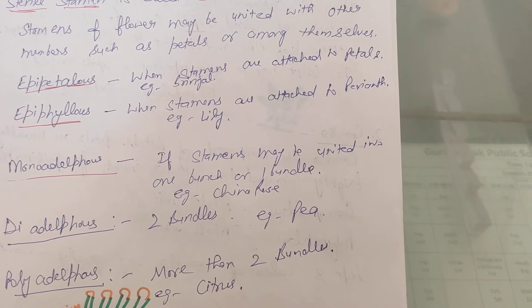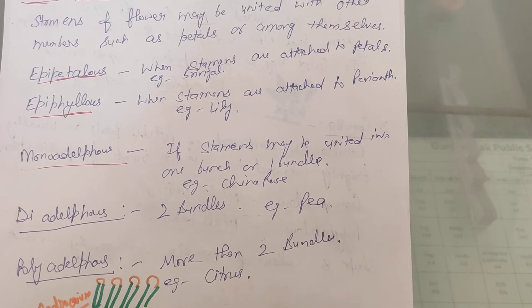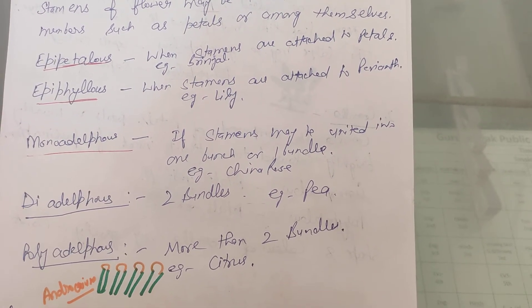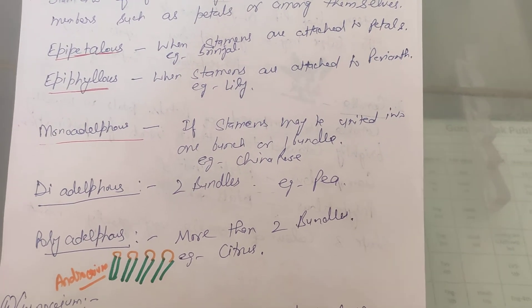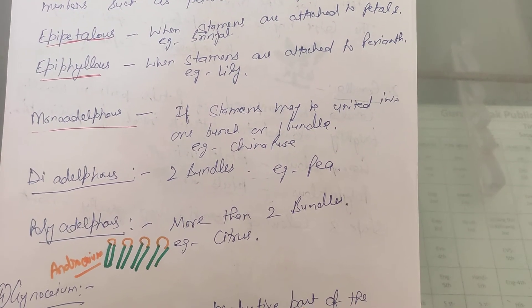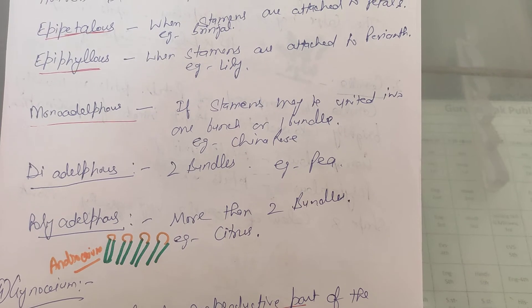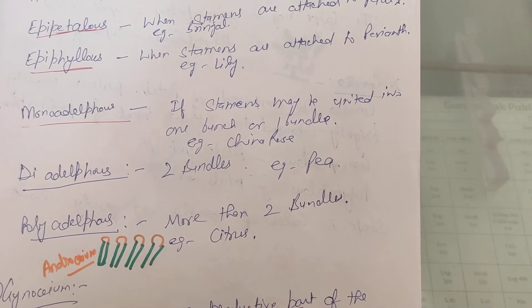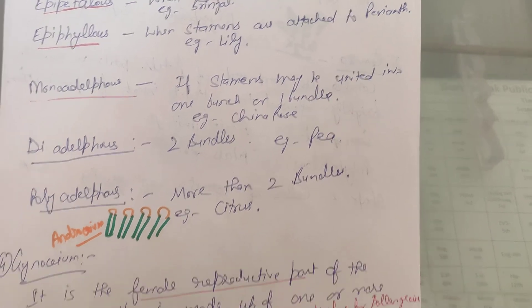When stamens are grouped in a bundle or bunch, it is called monadelphous — this is seen in china rose. Diadelphous means stamens are in two bundles, and polyadelphous means stamens are in more than two bundles, as seen in citrus plants.